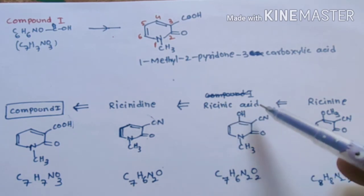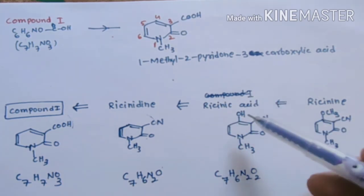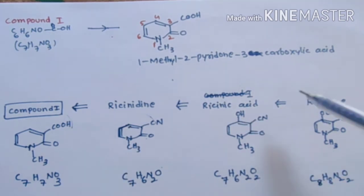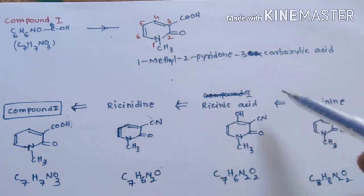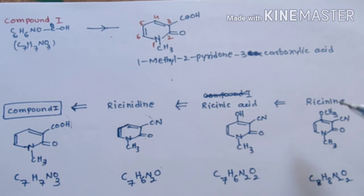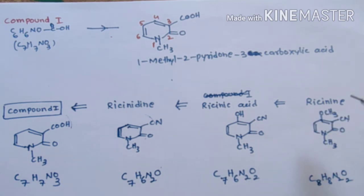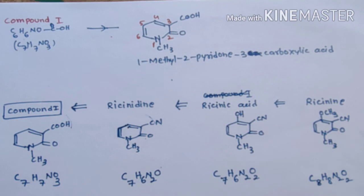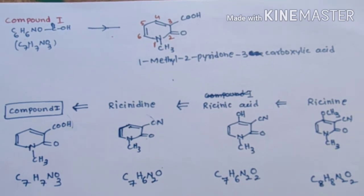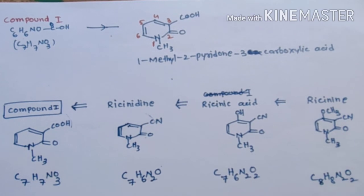Resinic acid contains one enol group, so to get the resinic acid structure we write one hydroxyl group in the appropriate position. We obtained resinic acid by hydrolysis of resinidine; when resinidine is subjected to alkaline hydrolysis we get resinic acid along with methyl alcohol. So in place of the hydroxyl group we write a methoxy group — this becomes the structure of resinidine, confirmed by its complete synthesis.